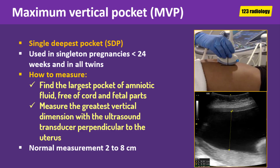Maximum vertical pocket, also called single deepest pocket, is used in singleton pregnancies less than 24 weeks of gestation and in all twins. To measure it, find the largest pocket of amniotic fluid that is free of cord and fetal parts, then measure the maximum vertical dimension with the ultrasound transducer perpendicular to the floor. This amniotic fluid pocket should be at least one centimeter in width. A normal measurement is between 2 to 8 centimeters, with values above and below this indicating polyhydramnios and oligohydramnios respectively.